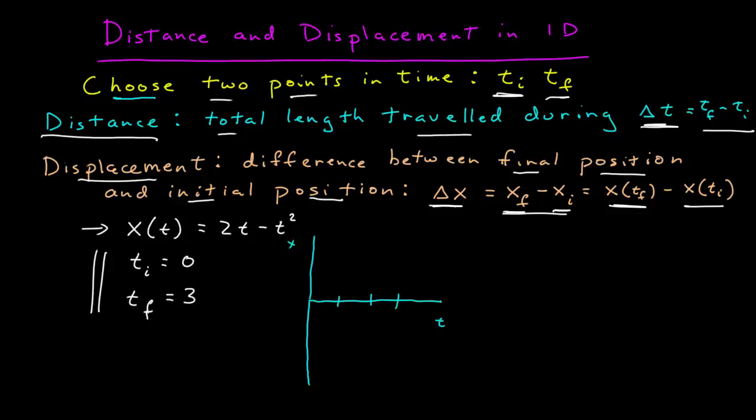At t equals zero, it's zero. t equals one, it goes up to one. t equals two, back to zero. So I'll call this one, zero. And t equals three, it looks like it goes down to one, two, minus three. I have this sort of parabola.